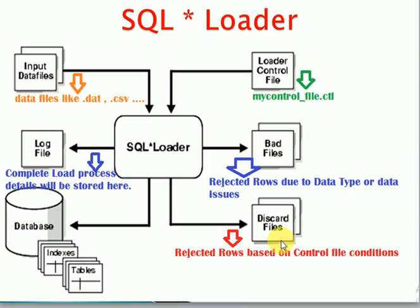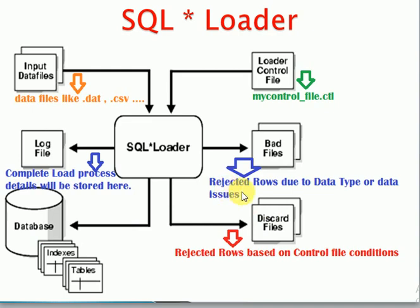The discard file contains records that you reject through the control file. For example, if you write some condition in the control file and a record does not satisfy that condition, you choose not to load that data — those rejected records go into the discard file. For instance, if you are loading 10 records and one has a data type issue like a special character in a numeric field, the system rejects that one record into the bad file and loads the remaining 9. If 2 out of 10 records don't satisfy your predefined conditions such as a project code check, those 2 records go into the discard file.